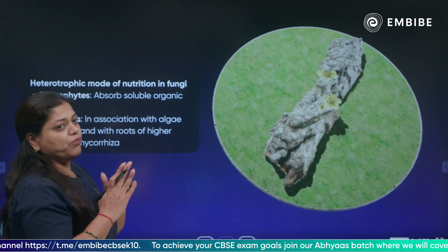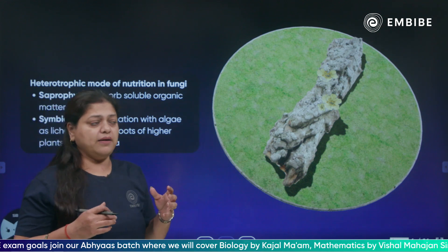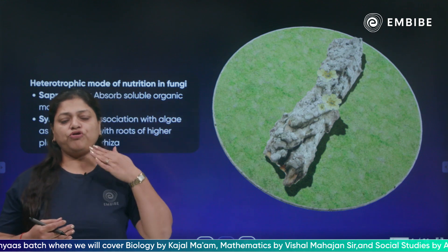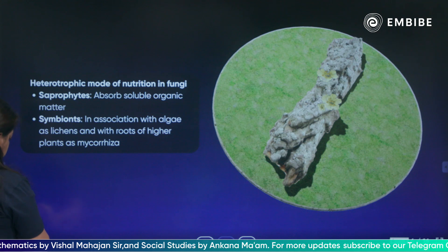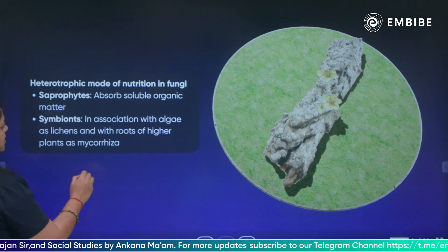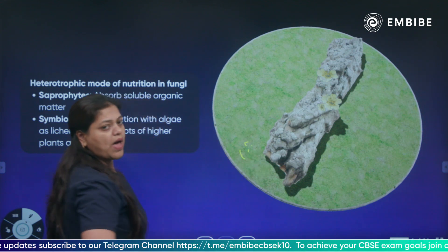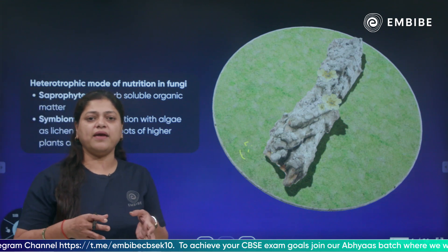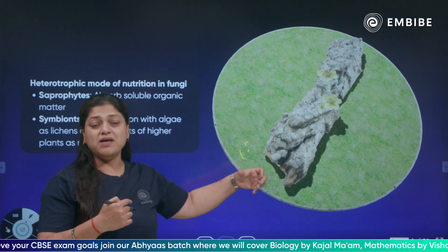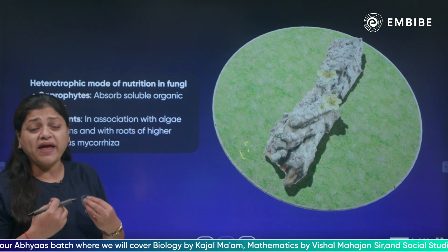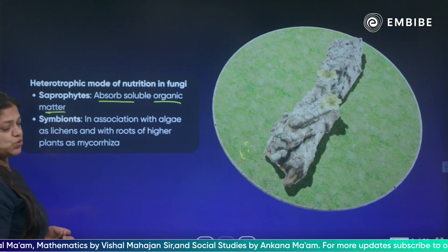Fungi show heterotrophic mode of nutrition — they don't contain chlorophyll, so they can't make their own food. They are saprotrophs — they secrete enzymes outside, digest the organic material in liquid form, and then absorb it. Dead and decaying matter is digested by enzymes outside the body and then absorbed. This type of nutrition is called saprotrophic.